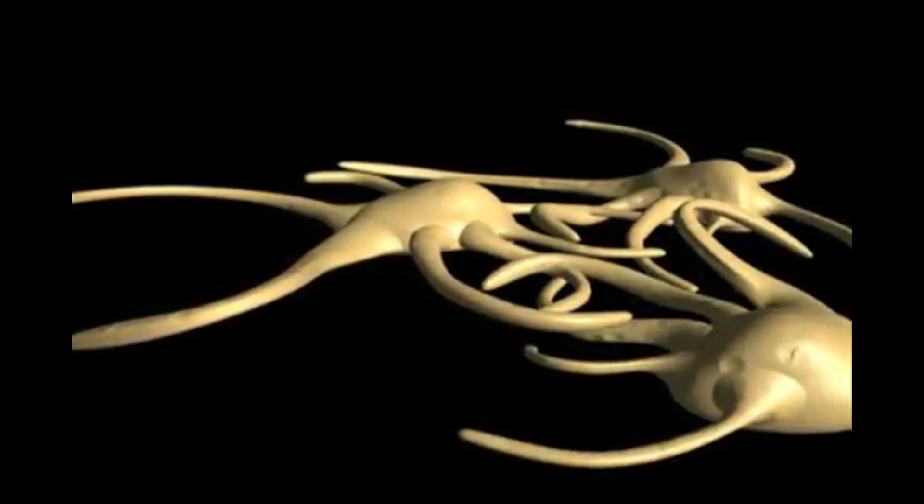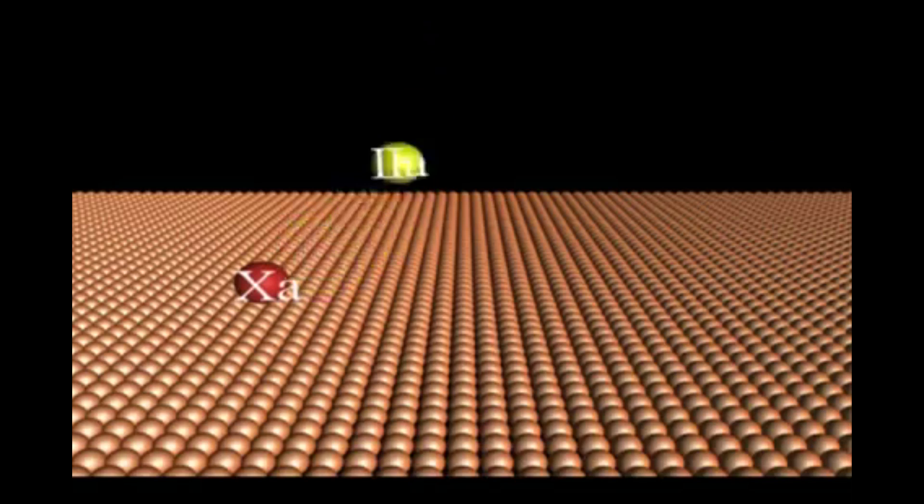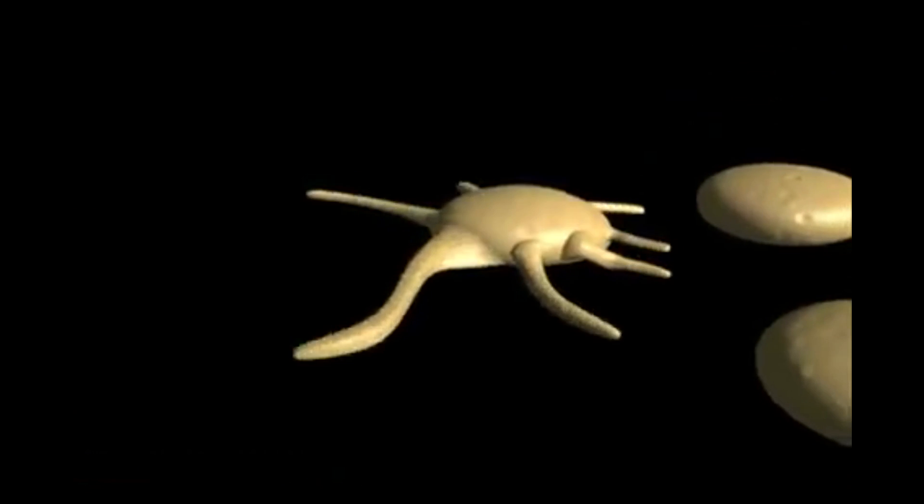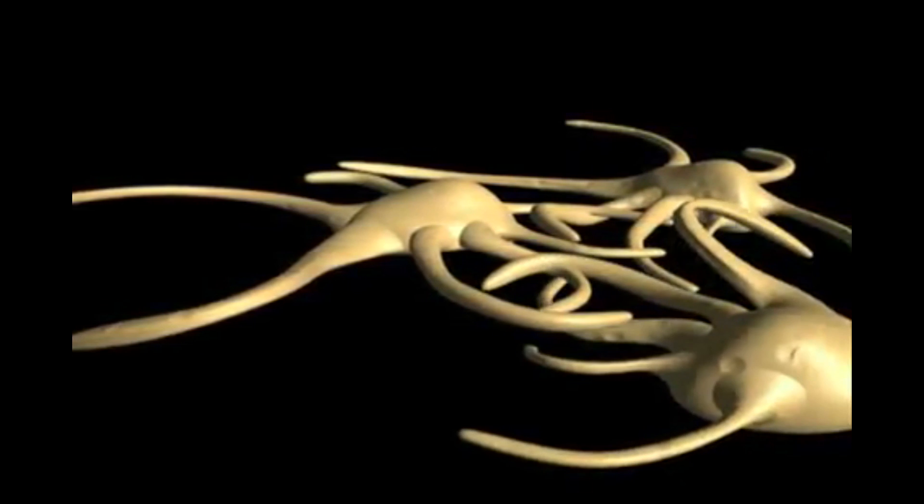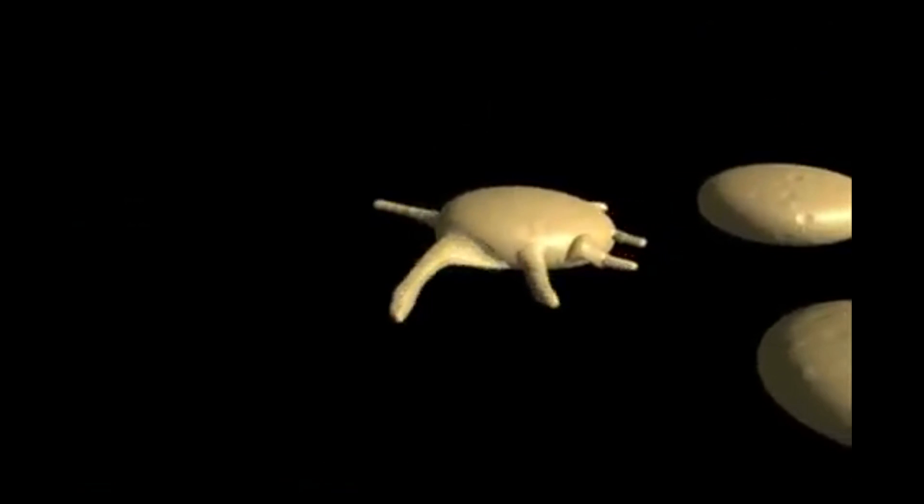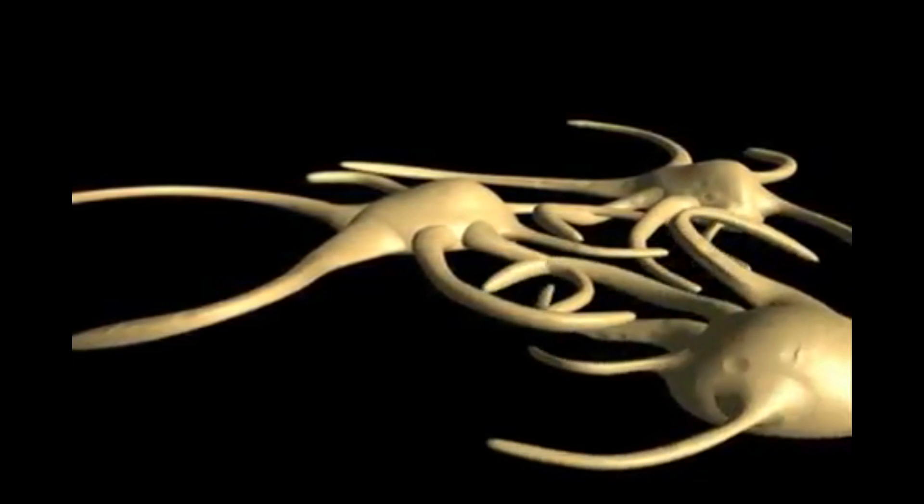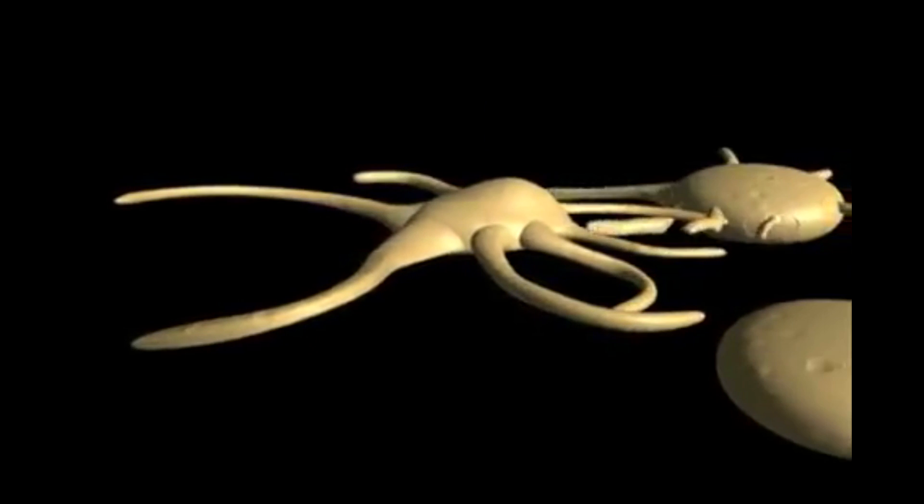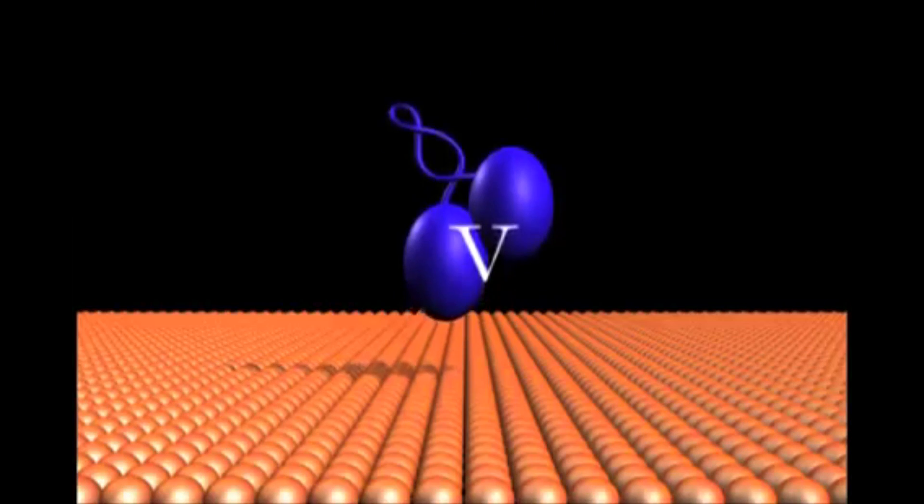However, this initially produced thrombin is sufficient to catalyze further activation of platelets through cleavage of the PAR-1 and PAR-4 membrane proteins, leading to further platelet activation, secretion, and aggregation. The small amount of thrombin initially produced also activates the plasma procofactors, factor 5 and factor 8.